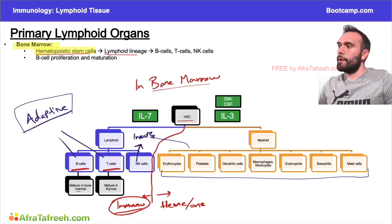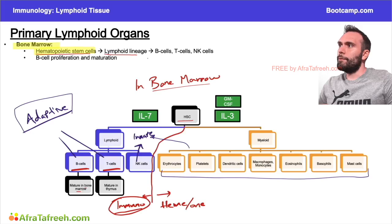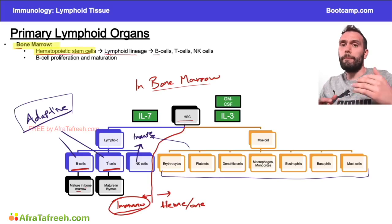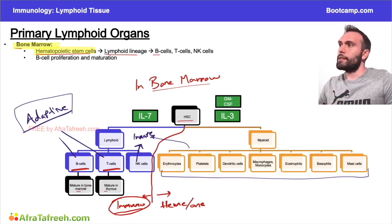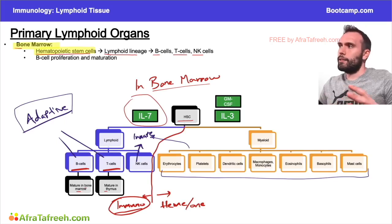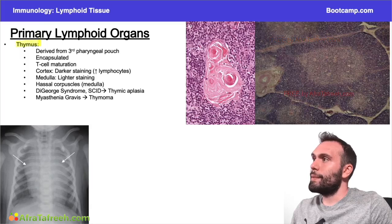The B cells and T cells both come from bone marrow, but where they mature is what's different. B cells are going to stay in the bone marrow and mature there — remember, B for B cells, B for bone marrow. T cells are formed in the bone marrow but mature in the thymus — T for T cell, T for thymus. All three cell types form from hematopoietic stem cells entering the lymphoid lineage, stimulated by interleukin-7.